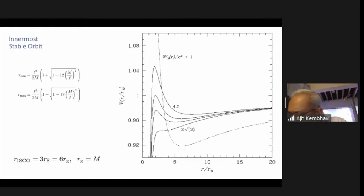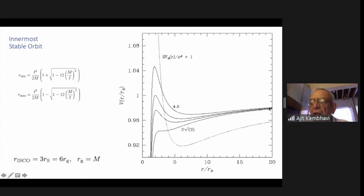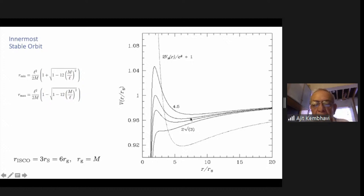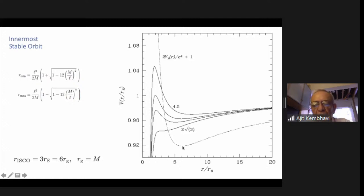When the maximum and minimum coincide, they do so at the radius which is 3 times the Schwarzschild radius, or 6 times the gravitational radius (which is GM by c squared, half the Schwarzschild radius). When this happens, there is a very important consequence. For a potential where a maximum and minimum exist, we have seen that there is a near-elliptical, stable orbit. But once you come to where the maximum and minimum coincide, there is no stable orbit.